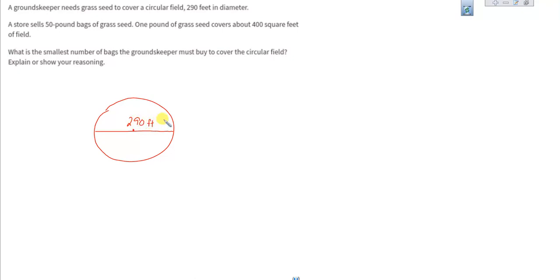All right, a store can sell 50 pound bags of grass seed. One pound covers 400 square feet. Let's make a little table of coverage here: pounds and then square feet. In one pound I can cover 400 square feet.